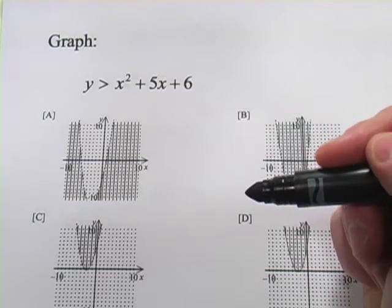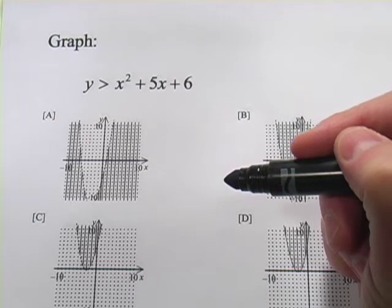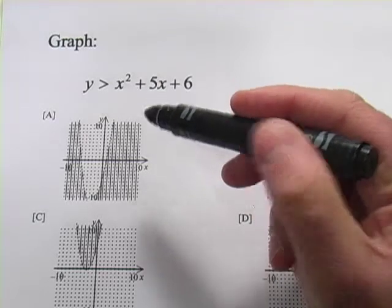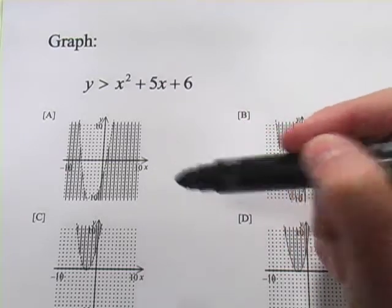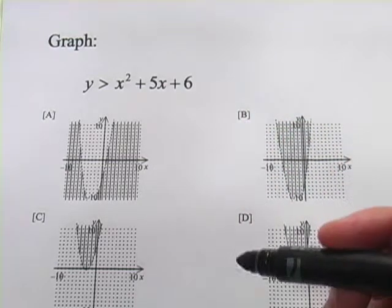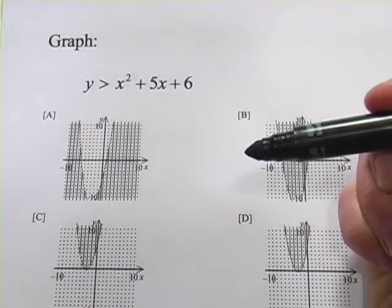In these problems, we're being asked to identify the graphs of quadratic inequalities. So instead of y or f of x equals some quadratic, we've got an inequality, a less than or greater than, less than or equal, greater than or equal. So just like other inequalities, like linear inequalities, part of the graph is going to be shaded.